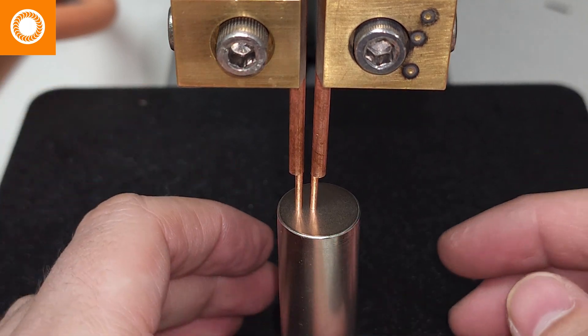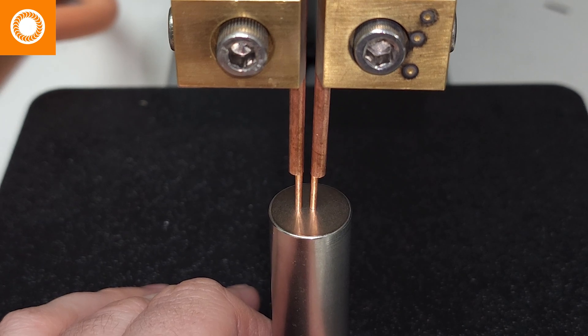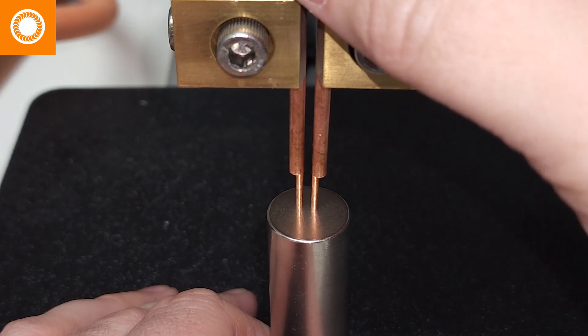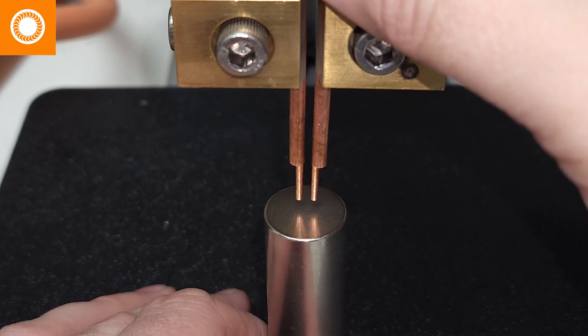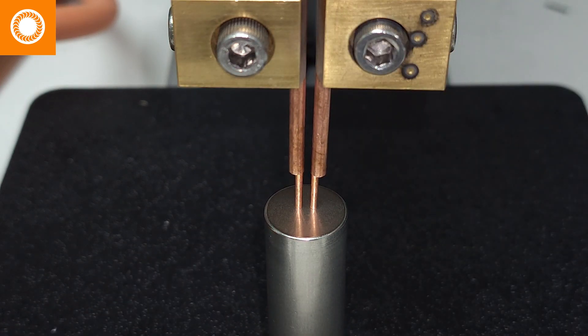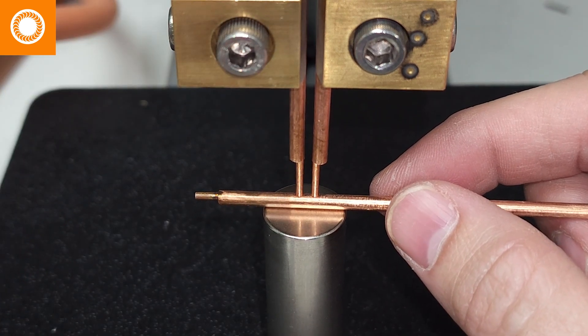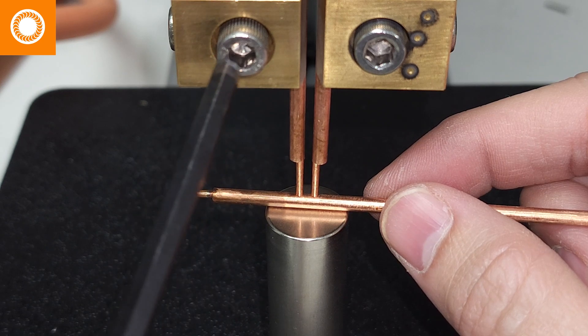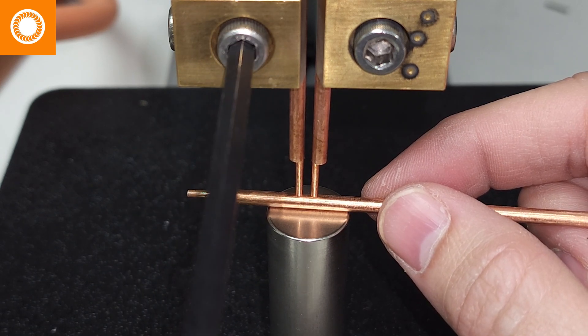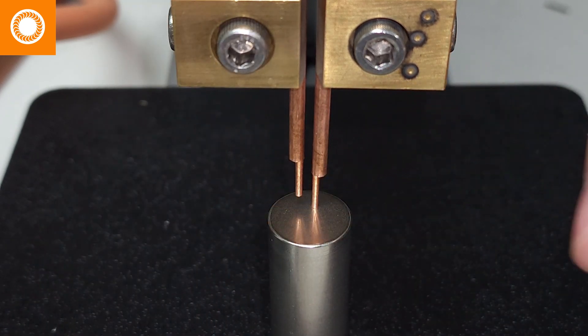Now I'm going to lift these both up so that they're about an eighth of an inch. These are eighth inch electrodes, so I can borrow another spare electrode and use that as a measuring tool. Once those are both set to where I want it to be, I can tighten these both up.